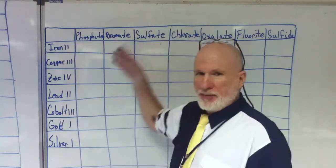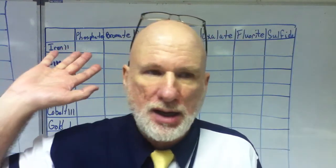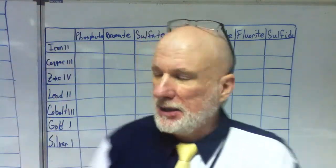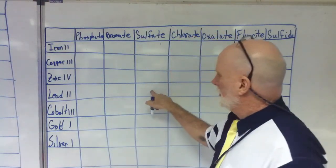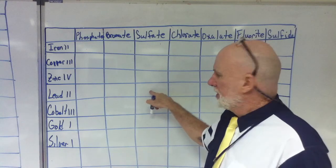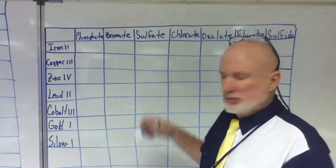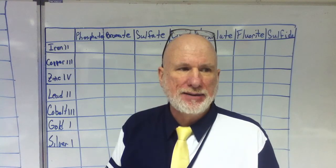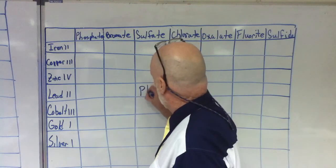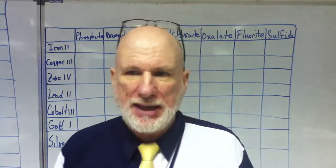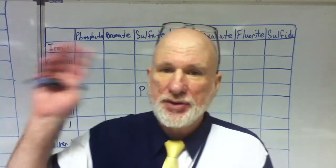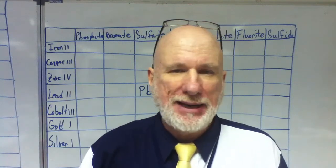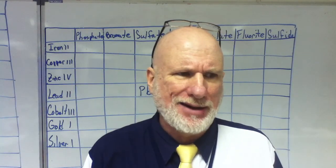This is going to be named to formula — you're going to have to do this for homework. Let's do this one: how would you write lead two? What's the formula for lead? PB. Right, PB. Extra credit if you can tell me before the end of the period why PB and not LE — what's with PB and lead?